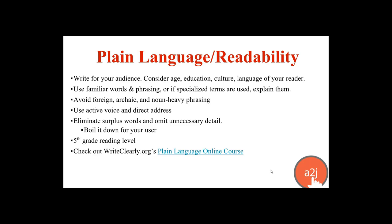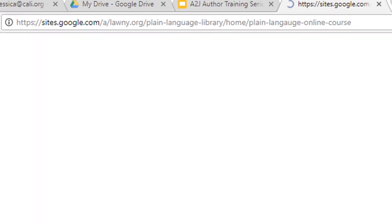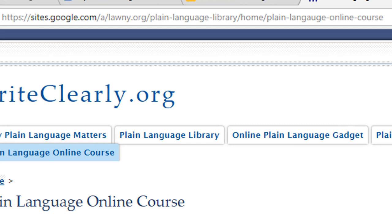Again, fifth grade reading level is the level we recommend. There are tools on the Report tab that will give you your grade ranking for your entire interview and question by question. When you run a full report, it will be green if under a seventh grade reading level, yellow if between seventh and ninth grade, and red if over ninth grade. At the very end you'll get your Flesch-Kincaid score. A great tip is to check out WriteClearly.org's plain language online course — they use A2J Author's sister software, Kali Author, to create lessons that help teach plain language in writing.